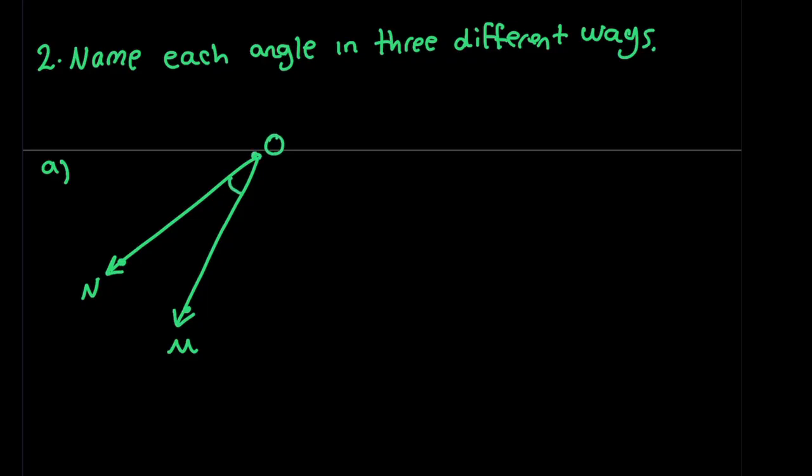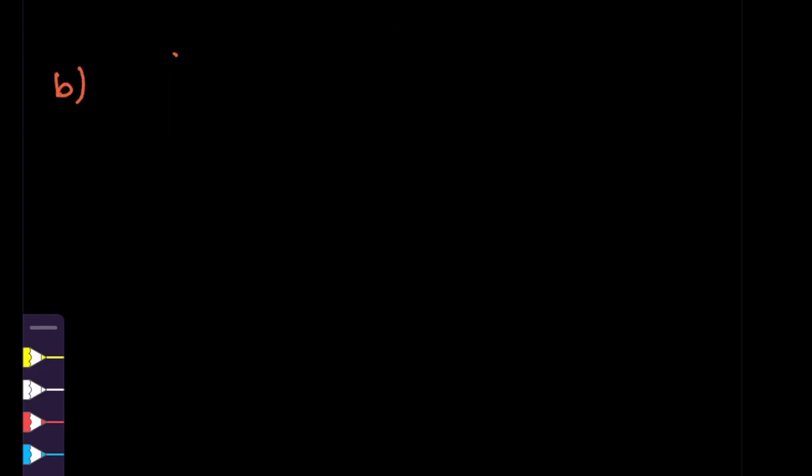So we have part A. The only angle I see in this figure is angle Y. How else can I call this angle? So we say or angle NOM or angle MON. Correct? So you see O is always in the middle. So where the two lines meet, that point is going to be in the middle when you're calling the angle.